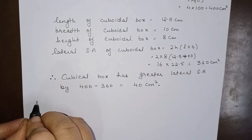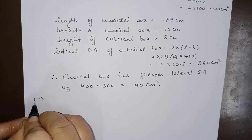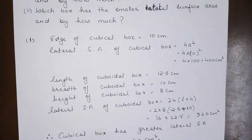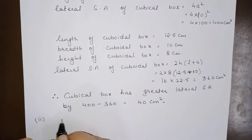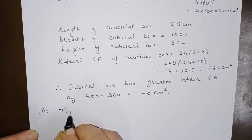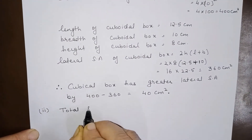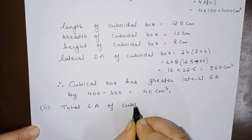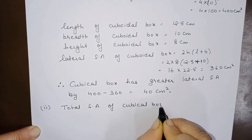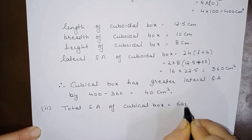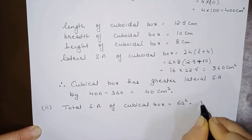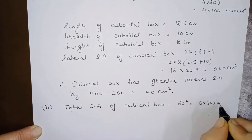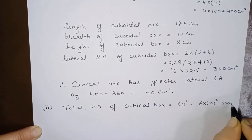Now let us start with the second part. In the second part, we have to find the total surface area. The total surface area of the cubical box is given by 6a², which is 6 into 10². Since 10² is 100, this gives 600 centimeter square.